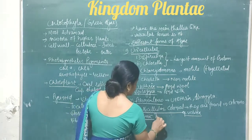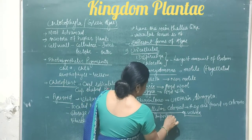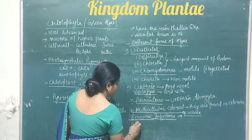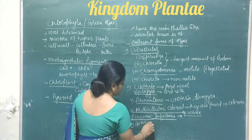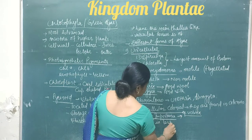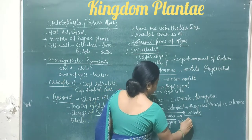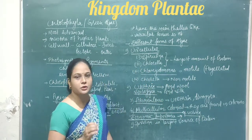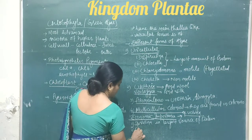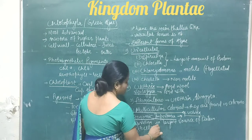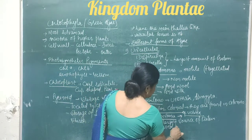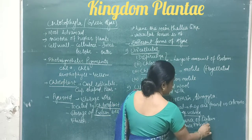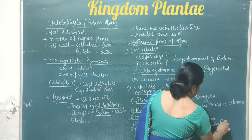Now, the economic importance of green algae. First, Spirulina and Chlorella are the largest sources of protein. Second, Chlorella is used by space travelers as food and also for oxygen liberation.